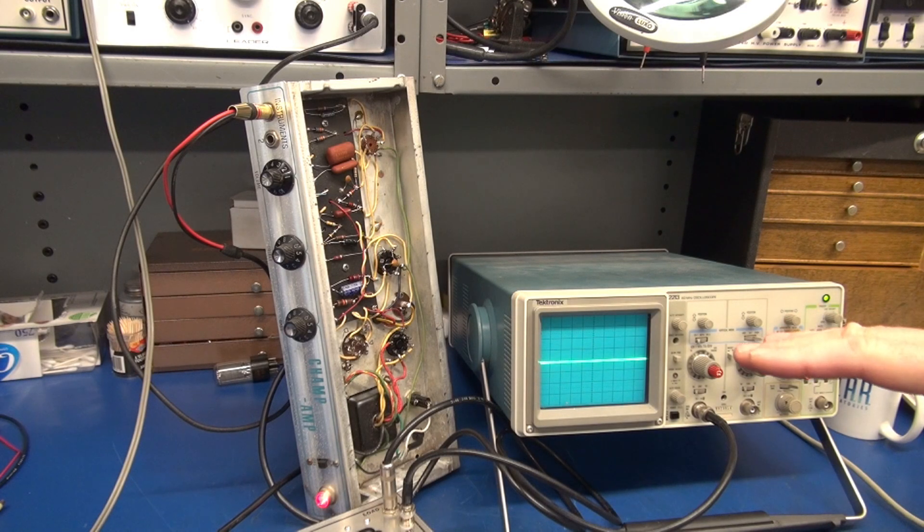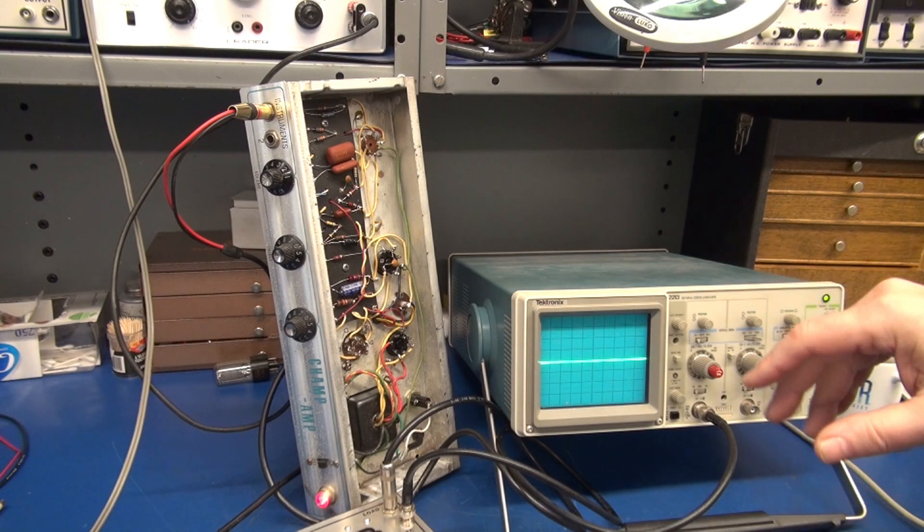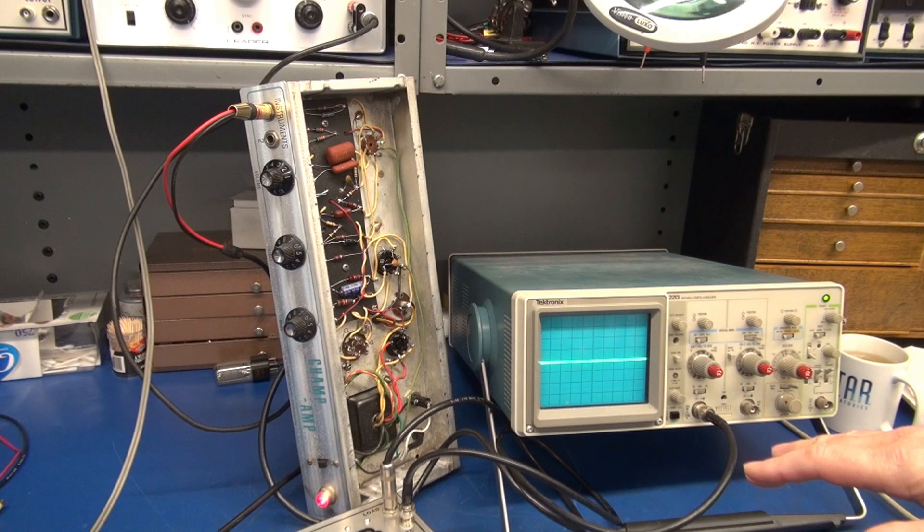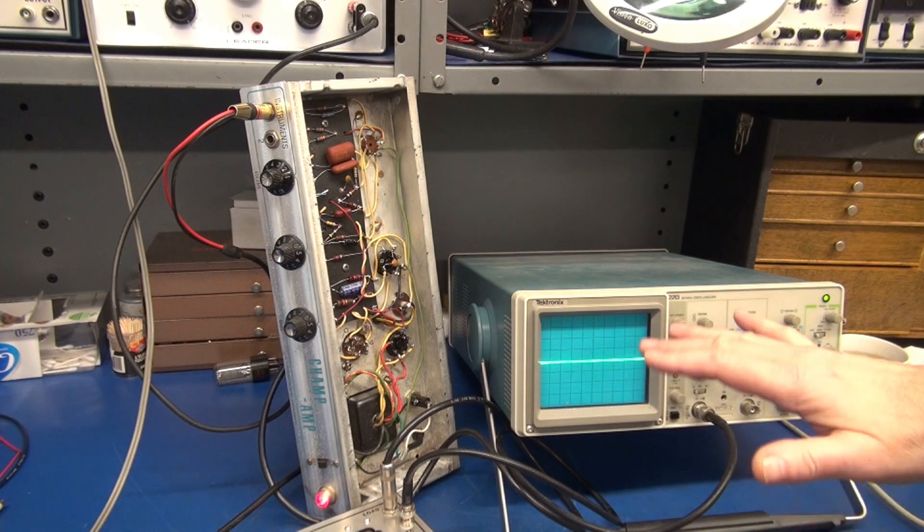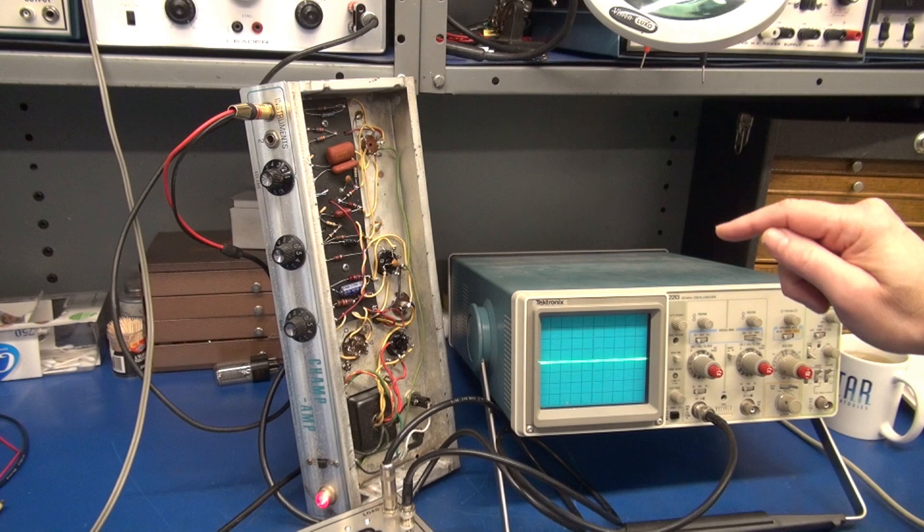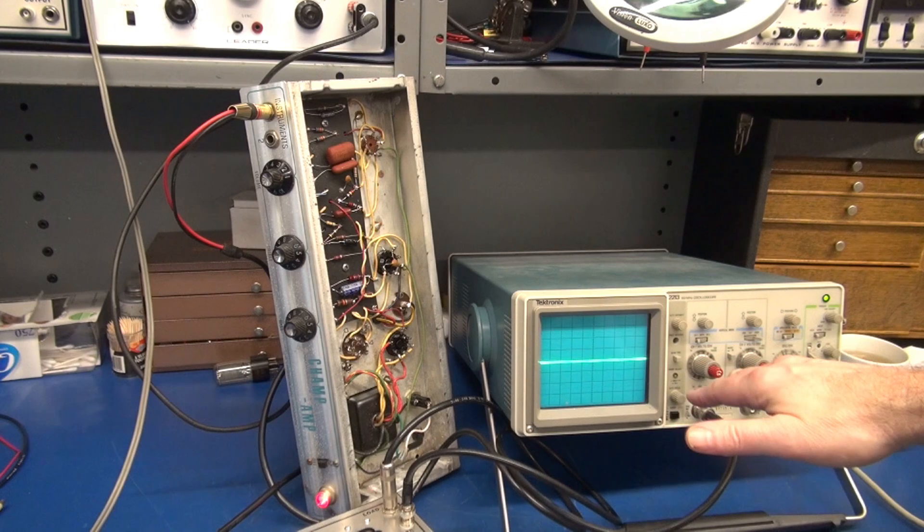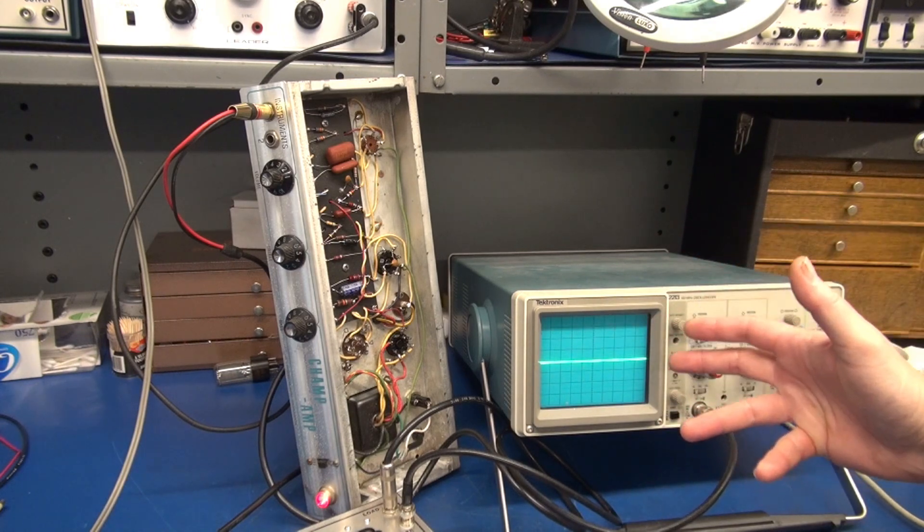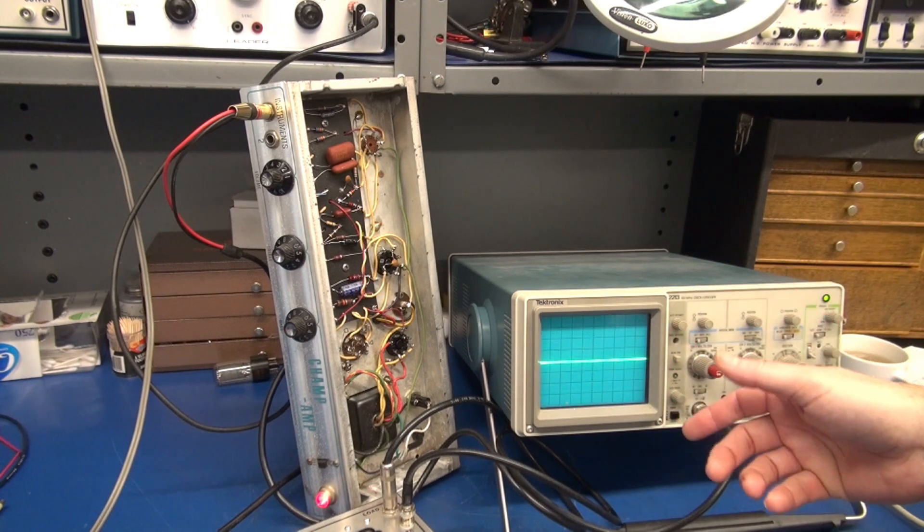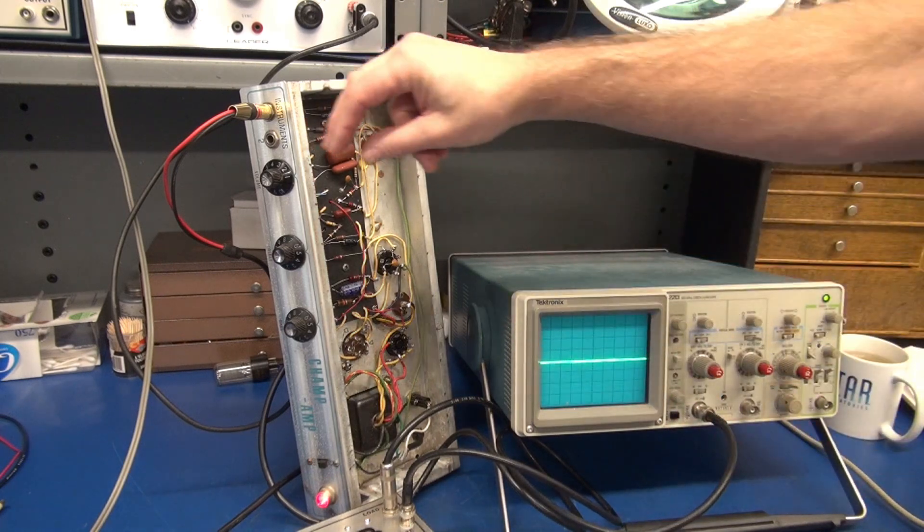All right I've incorporated all the changes to the Champ and I'm ready to repeat our gain test. Nothing has changed. The setup is identical. But now when we turn that pot to 10 let's hope that we just don't see a standard sine wave. Let's hope that we see breakup because that's what you want your Champ to do. Here we go.